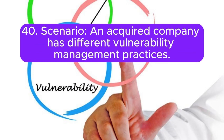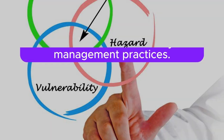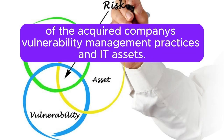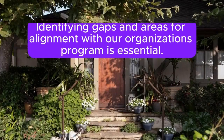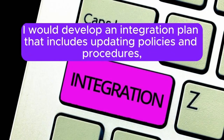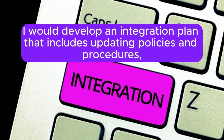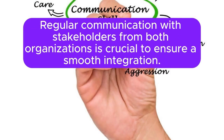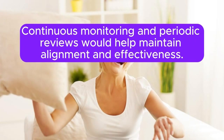Scenario 40: An acquired company has different vulnerability management practices. How do you integrate their systems into your program? I would start by conducting a comprehensive assessment of the acquired company's vulnerability management practices and IT assets. Identifying gaps and areas for alignment with our organization's program is essential. I would develop an integration plan that includes updating policies and procedures, training for the acquired company's security team, and configuring tools to ensure consistency. Regular communication with stakeholders from both organizations is crucial to ensure a smooth integration. Continuous monitoring and periodic reviews would help maintain alignment and effectiveness.